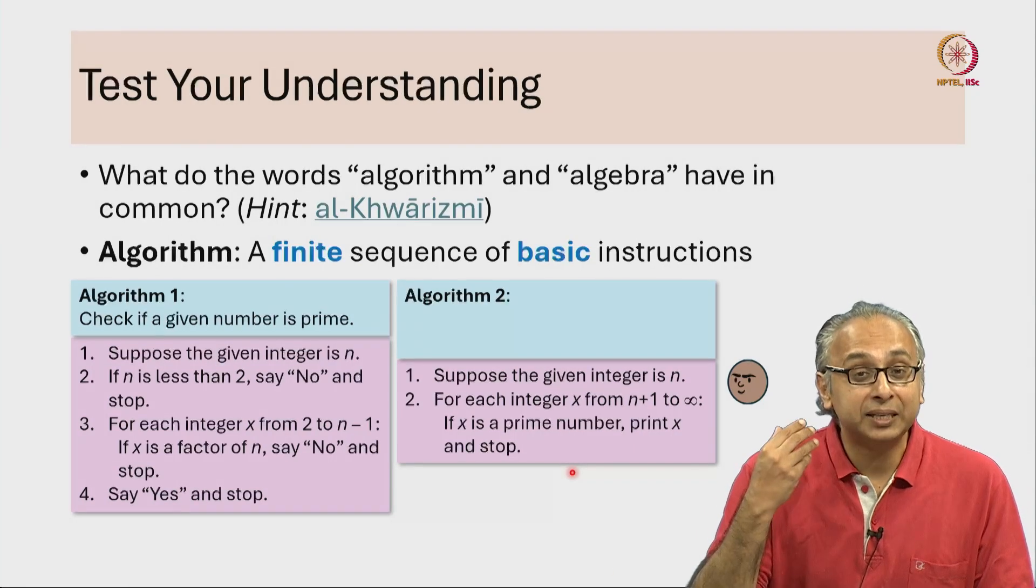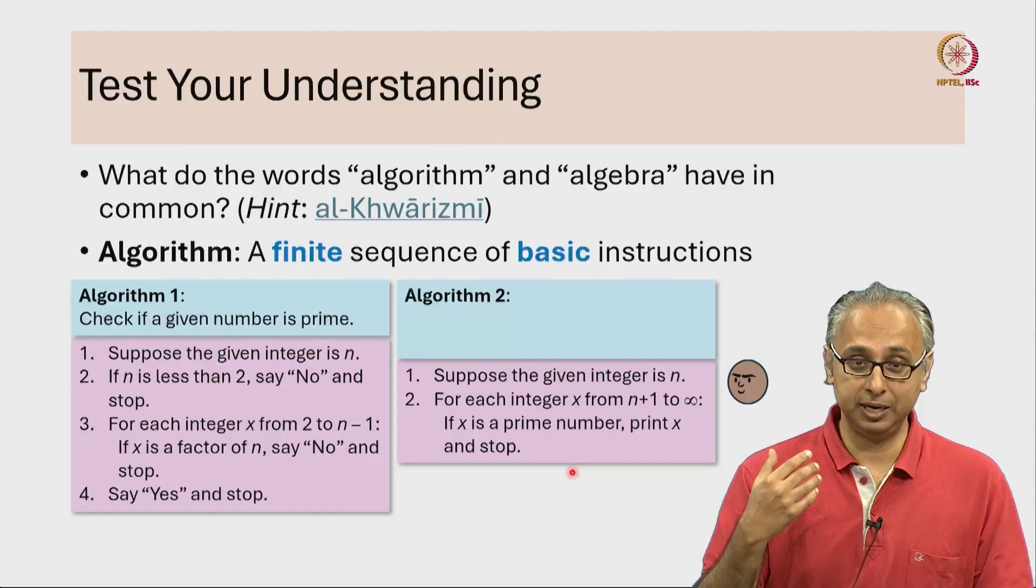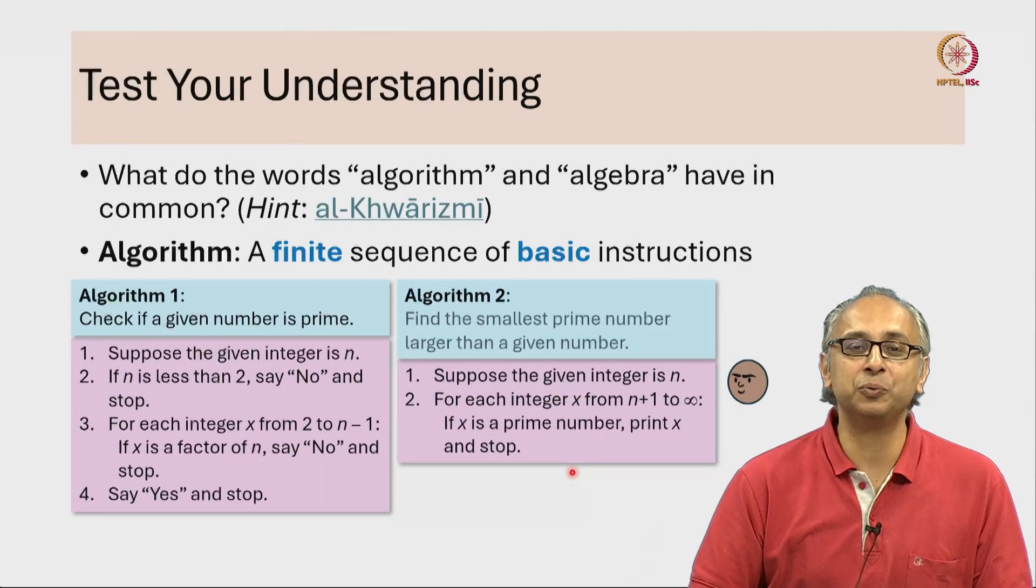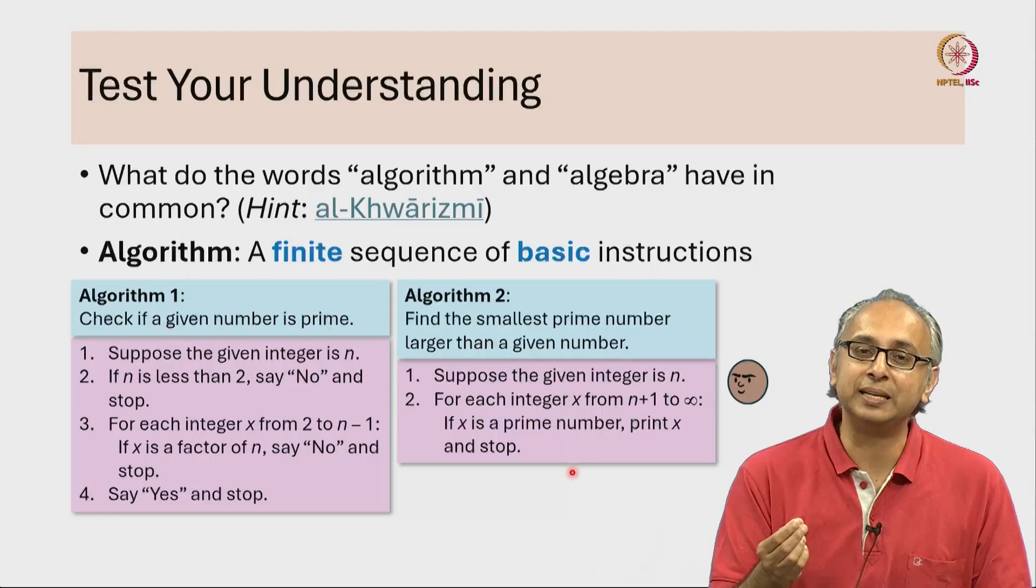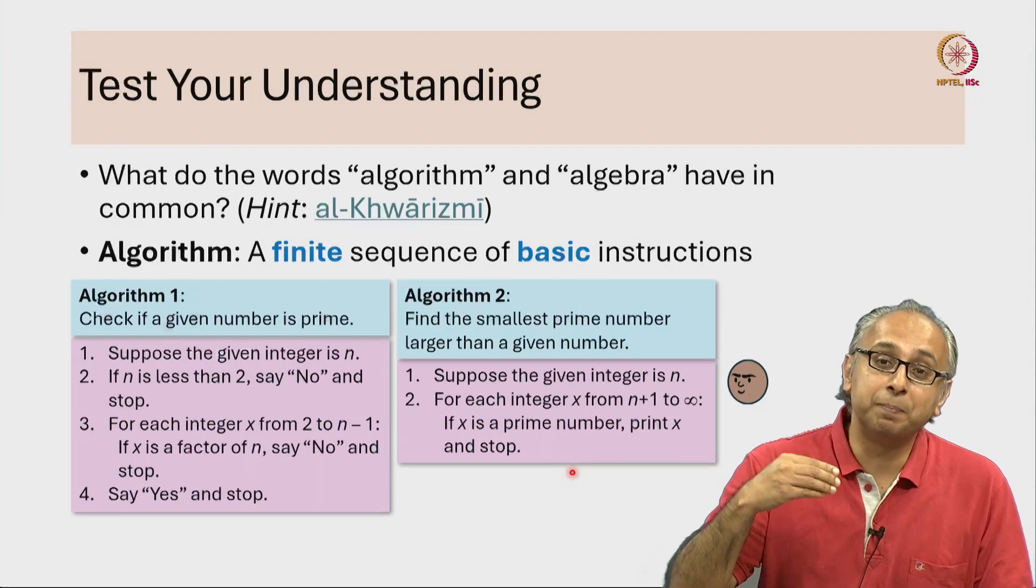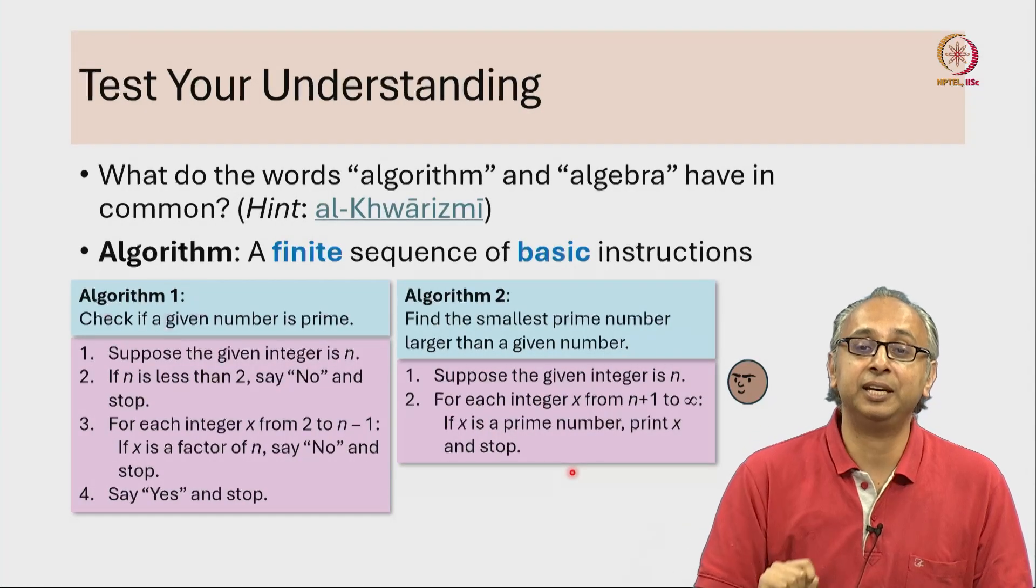So I am sure with that understanding you can now understand what this algorithm is trying to do. It is simply trying to find the smallest prime number that is bigger than a given integer n.